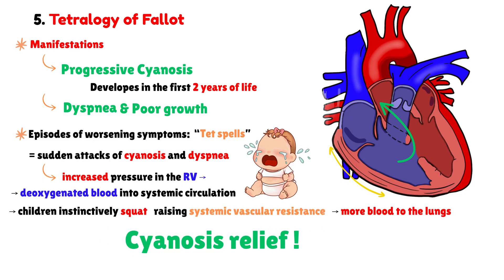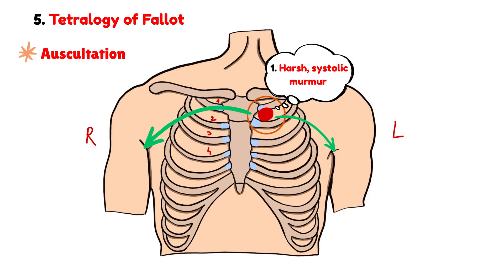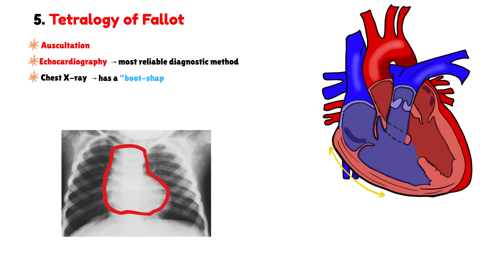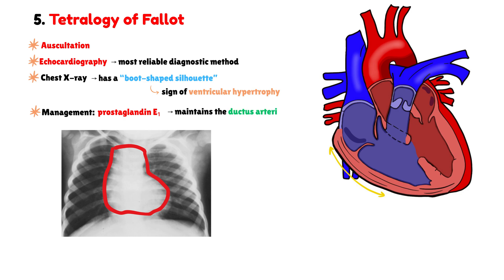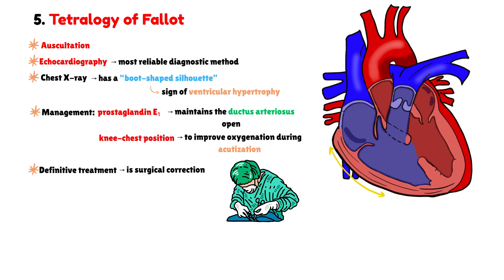On cardiac auscultation, the murmur is best heard at the upper left sternal border in the second intercostal space. It is a harsh, systolic murmur that may radiate to both axillae. Echocardiography remains the most reliable diagnostic method. However, some specific signs also appear on a chest x-ray, where the heart often has a boot-shaped silhouette, a classic feature reflecting right ventricular hypertrophy. In severe cases, treatment begins with prostaglandin E1, which helps maintain the ductus arteriosus open. During acute cyanotic episodes, the infant should be placed in a knee-chest position to improve oxygenation. However, the definitive treatment for Tetralogy of Fallot is surgical correction, ideally performed within the first year of life.